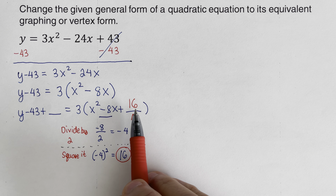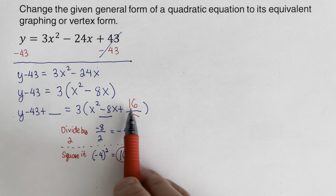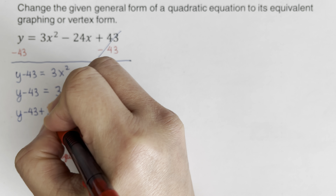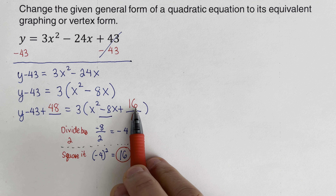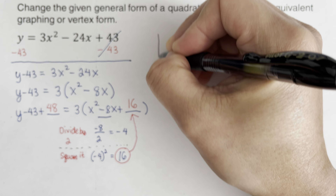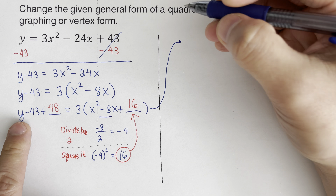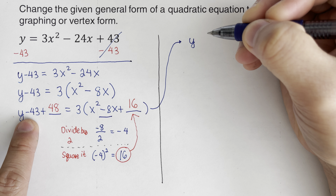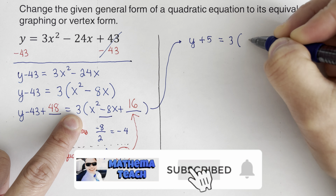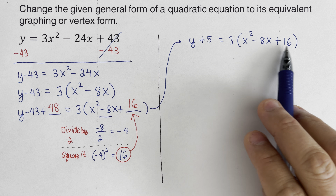Notice that the 16 inside the parentheses is actually multiplied by 3, so on the left side we add 3 times 16, which is 48. Simplifying, negative 43 plus 48 gives positive 5. The equation becomes y plus 5 equals 3(x squared minus 8x plus 16), where x squared minus 8x plus 16 is a perfect square trinomial.